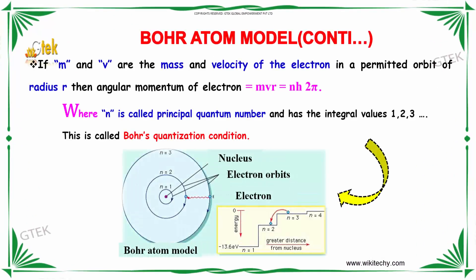If m and v are the mass and velocity of the electron in a permissible orbit of radius r, then the angular momentum of the electron is equal to m into v into r, which equals n into h by 2 pi, where n is called the principal quantum number and has integral values of 1, 2, 3, etc. This is called Bohr's quantization condition.